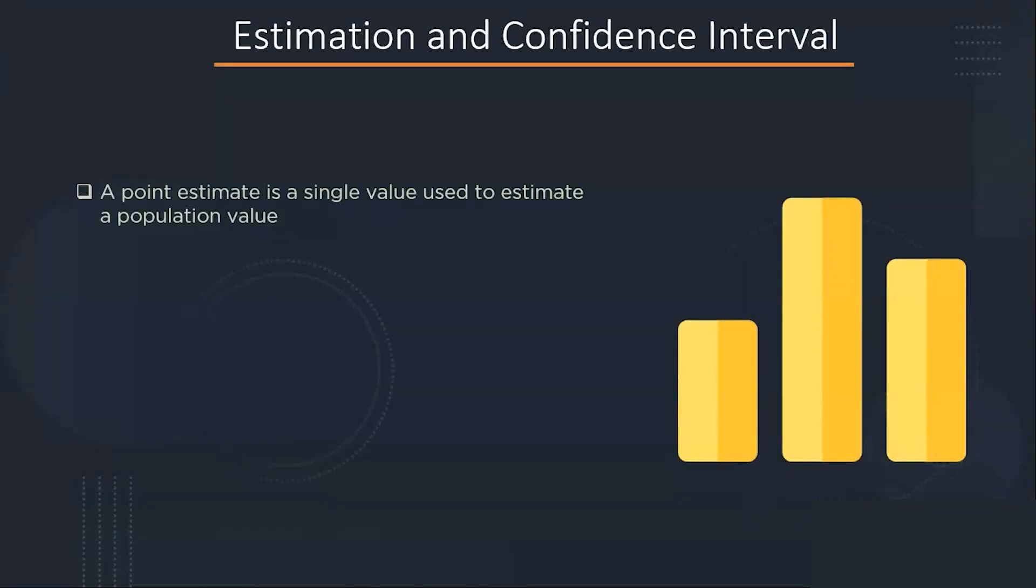Using descriptive and inferential statistics, you can make two types of estimate about the population: one is point estimate and other is interval estimate. A point estimate is a single value estimate of a parameter, for instance, a sample mean is a point estimate of a population mean.